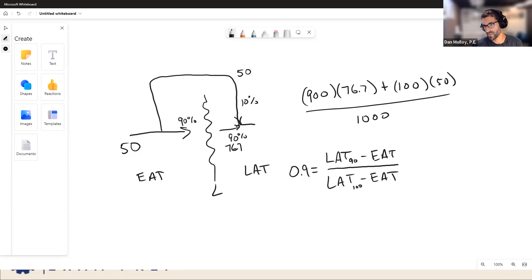And so if we know this enters at 50 and we know that it could leave at 76.6 and we know the coil efficiency is 90%, the only thing we don't know is the leaving air temperature. And it turns out that the leaving air temperature that comes out of this calculation is exactly the same as what you would get if you do this mixing calculation. So your understanding is absolutely correct.